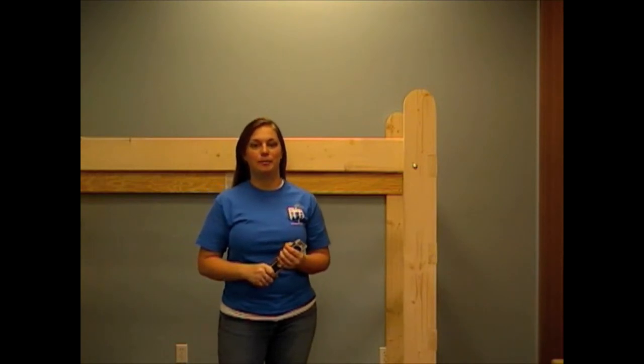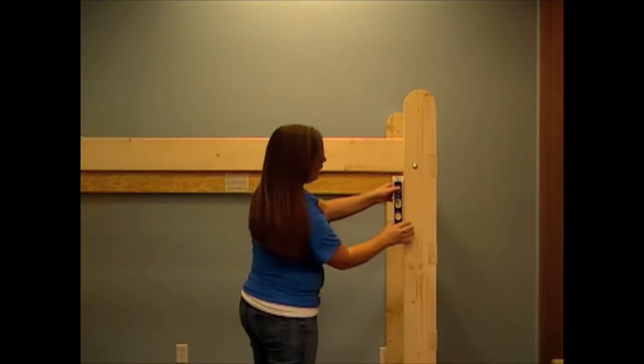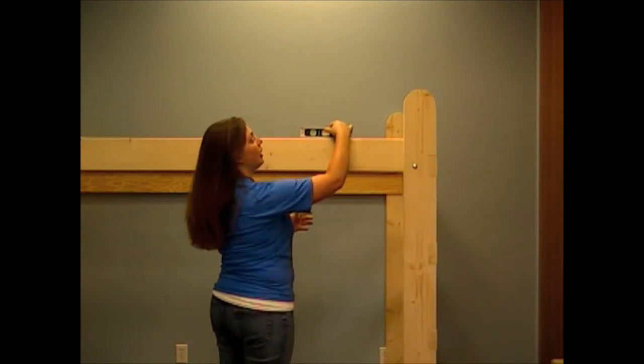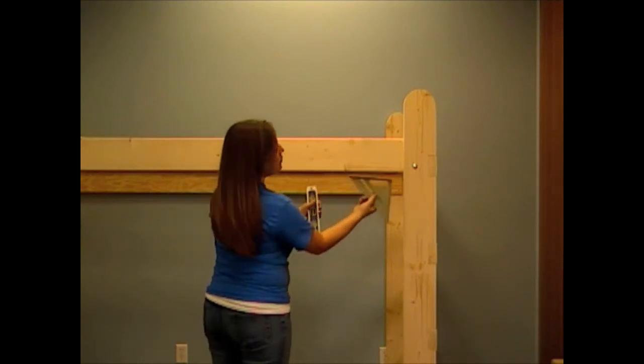Okay, now we're ready to level our loft to make sure it's square. If you have a square or level, you can use it by leveling out the leg and the front rail. Or, take your square and check for the right angle.